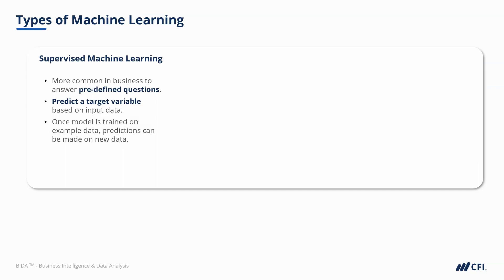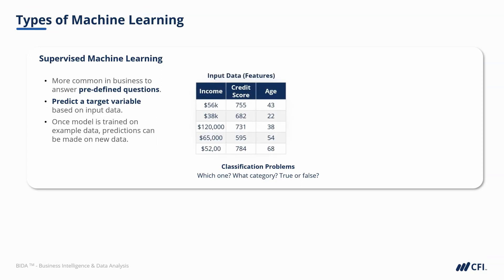There are typically two types of predictions we're trying to make with supervised predictive models. First, we have those questions that answer 'which one,' 'what category,' or 'true or false' questions. These are classification questions that use a set of input data to make predictions about an unknown data point known as the target.